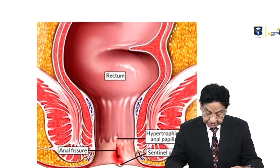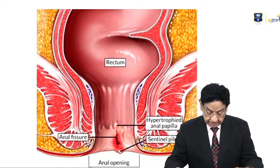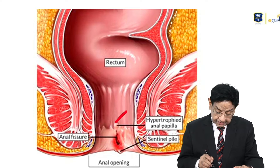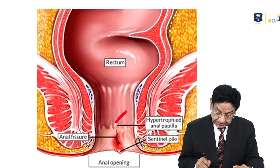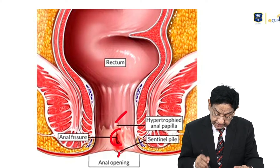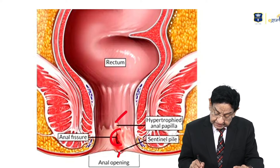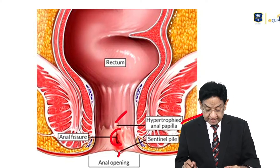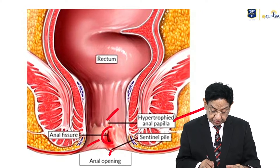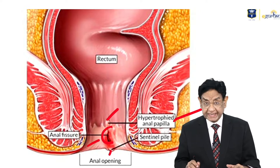Also visible is a hypertrophic anal papilla, the anal fissure shown longitudinally, and a sentinel pile. The diagram illustrates how a hypertrophic anal papilla occurs alongside a longitudinal tear.